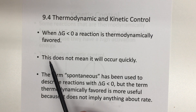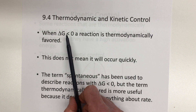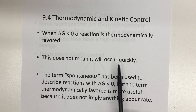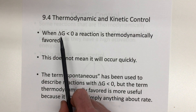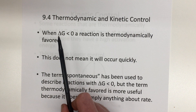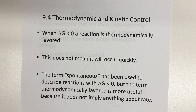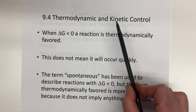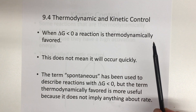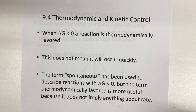A note on this is that being thermodynamically favored, or delta G being less than zero, does not mean a reaction will occur quickly. Sometimes we'll calculate a delta G, look at the reaction, and nothing happens — it doesn't happen quickly. The reason for that could be a high activation energy, and that's what kinetic control is about. Even if a reaction is thermodynamically favored, it may not happen at a noticeable rate.